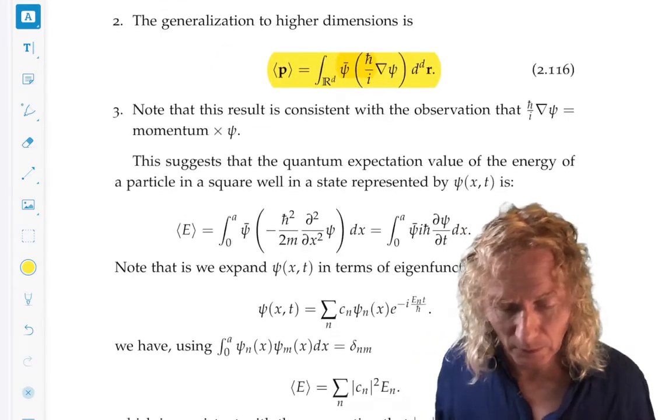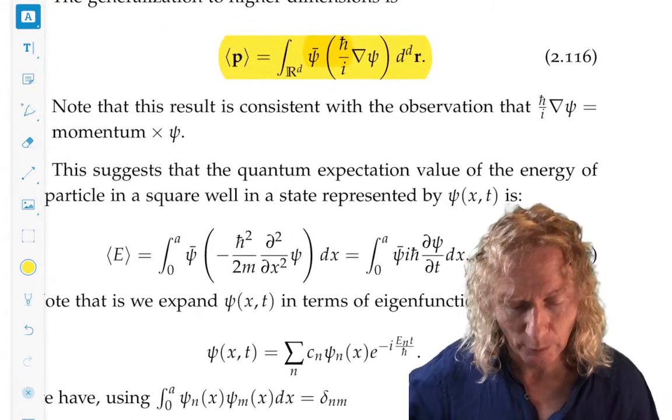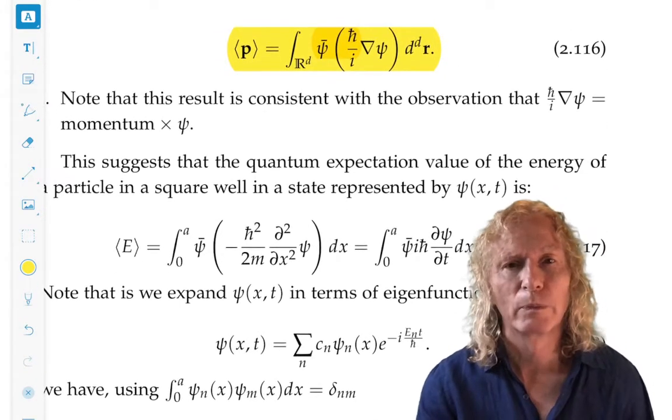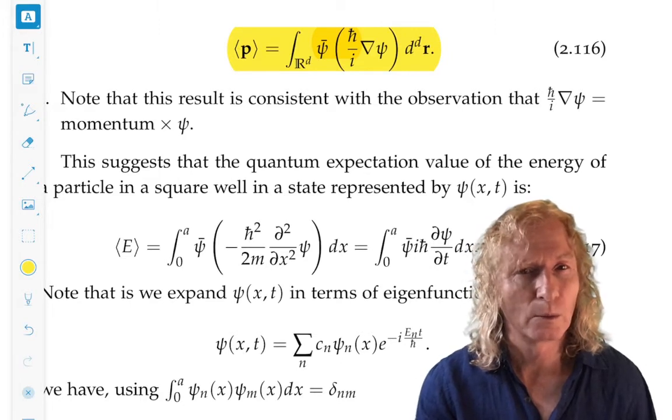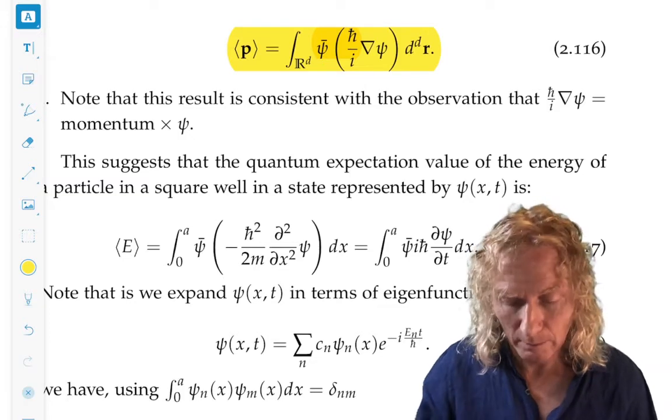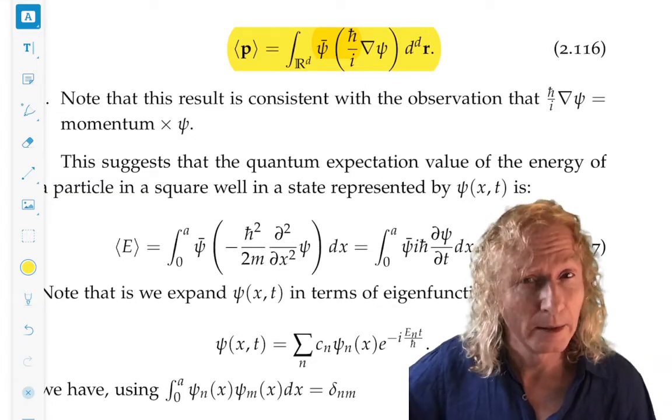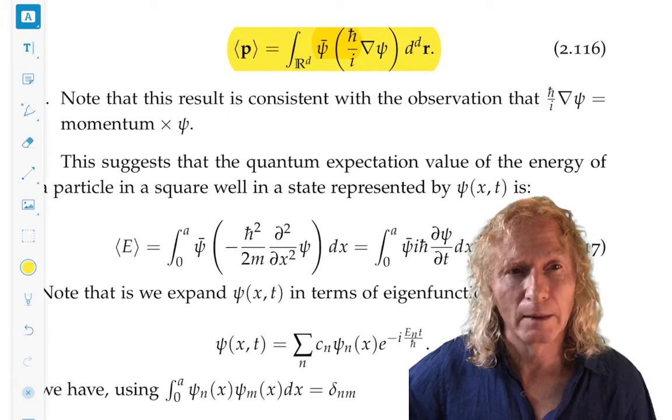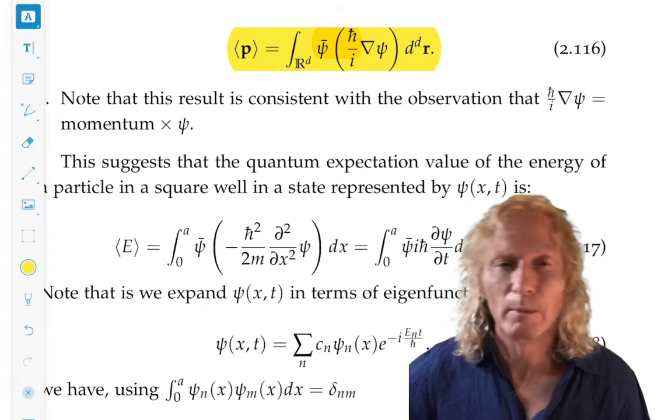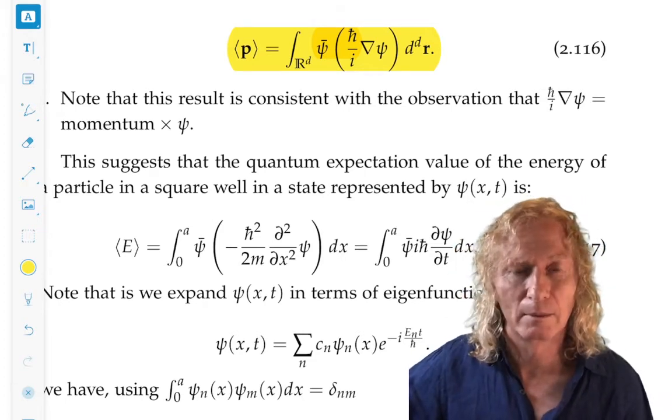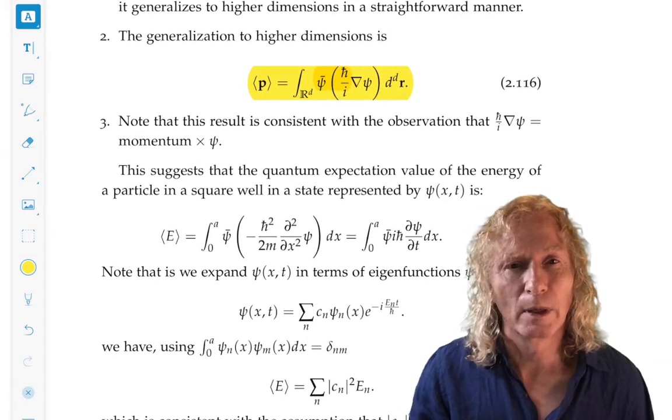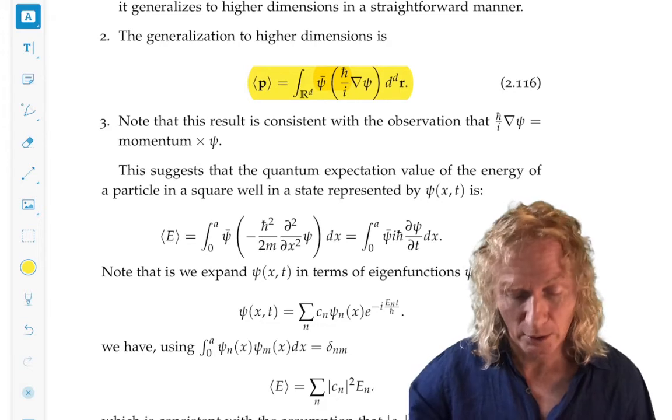Now, this next statement seems kind of like a throwaway statement, but in some sense it's not because it gives you considerable insight. This result is consistent with the observation we made earlier after we derived the probability current, that h bar over i grad acting on psi is the quantum mechanical equivalent to momentum acting on psi.